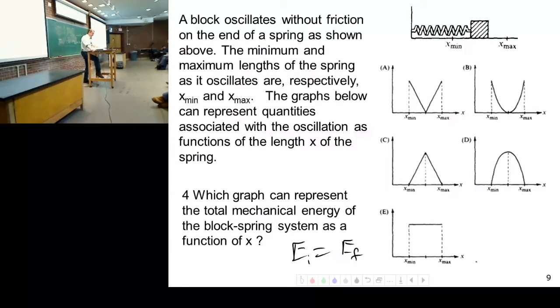So a block oscillates without friction on the ends of a spring. The minimum and maximum lengths of the spring as it oscillates are respectively X-min and X-max, stretches, compresses. The graph below represents quantities associated with the oscillation. Which graph can represent the total mechanical energy of the block spring system?